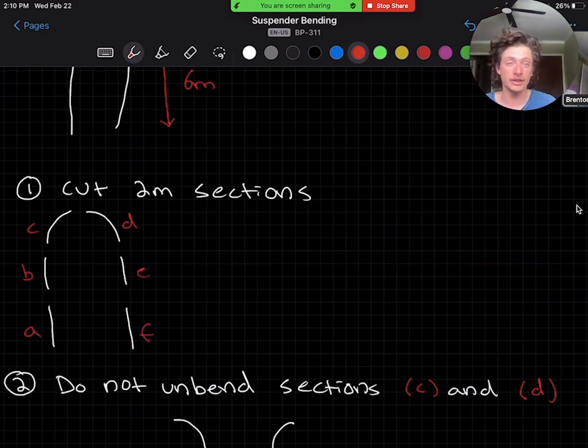Sections A, B, E, and F are going to be usable like normal, and you can follow the normal course videos. But sections C and D are going to have a light bend to them because they create this U shape that is inherent with the delivery. So we do not want you to unbend sections C and D.